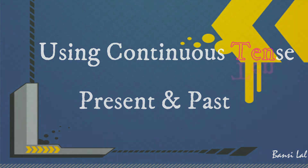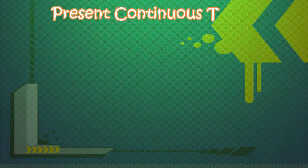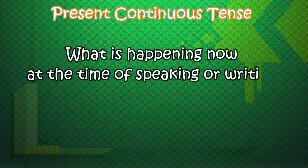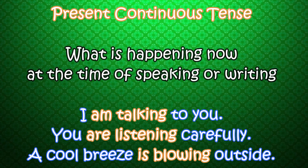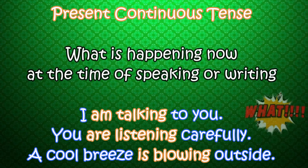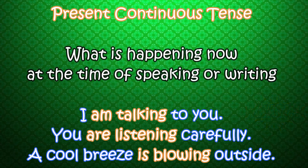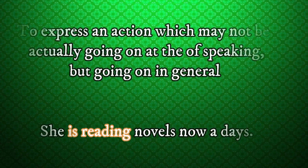As we have discussed earlier in previous videos, present continuous tense shows what is happening now at the time of writing or speaking. It is used to show what is happening at the moment we are talking or writing. For example: I am talking to you, you are listening carefully, a cool breeze is blowing outside.